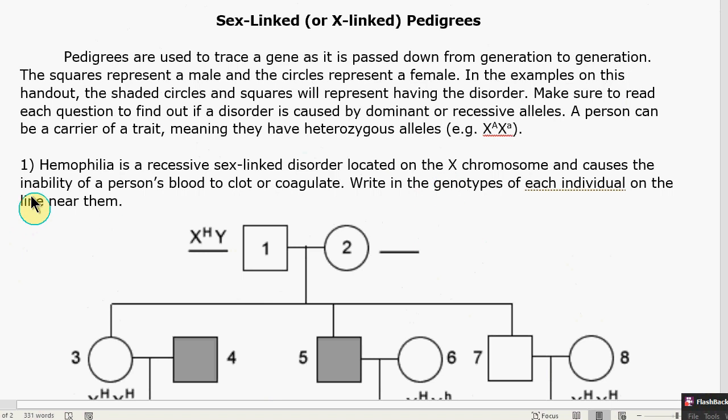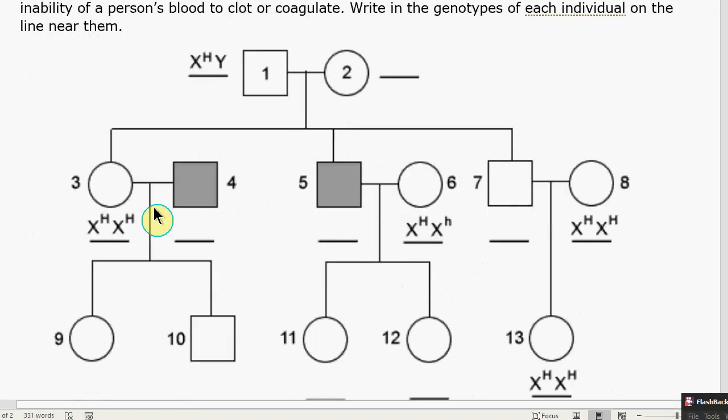So in our first example here, which we'll do together, hemophilia is a recessive sex-linked disorder located on the X chromosome and causes the inability for a person's blood to clot or coagulate. Write in the genotypes of each individual on the line near them.